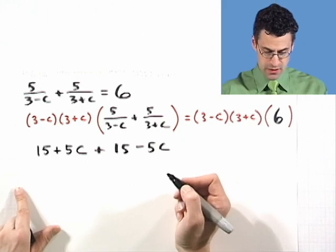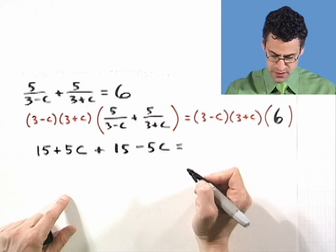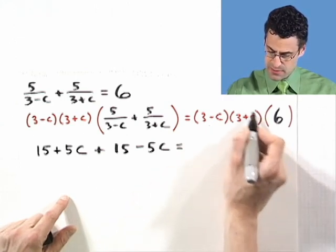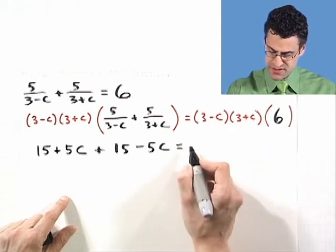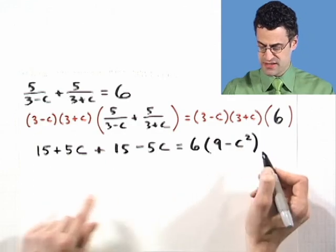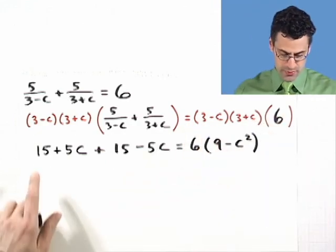See that? Alright, and now what do we have on the right hand side? Well on the right hand side, what I see here is six times, and I've got to multiply this out, but that's sort of easy to do. It's just going to be nine minus C squared, because the outside and the inside terms actually add to give zero.